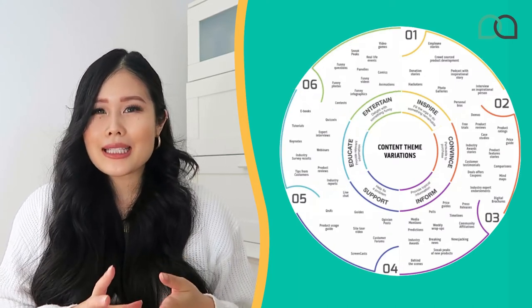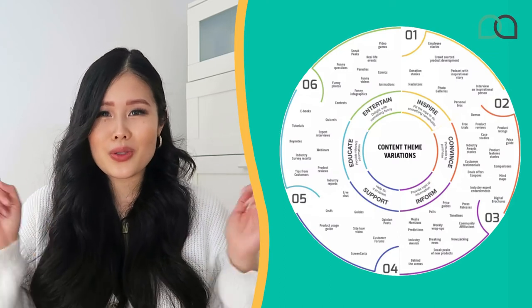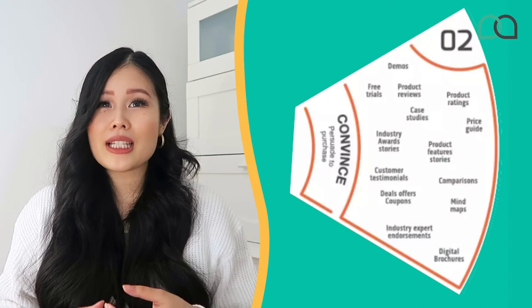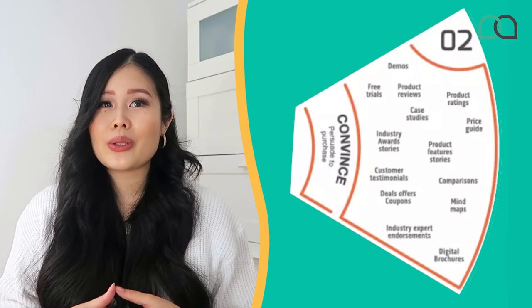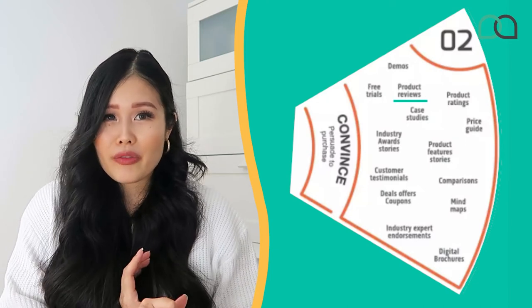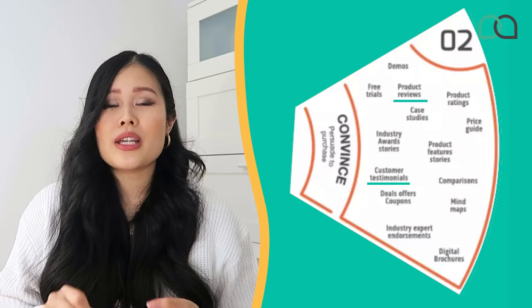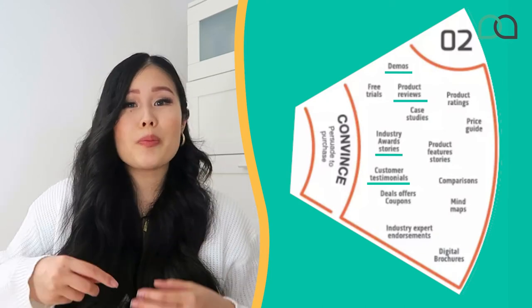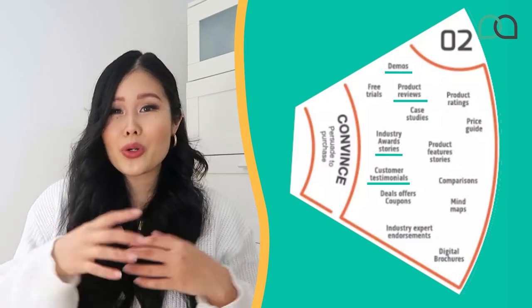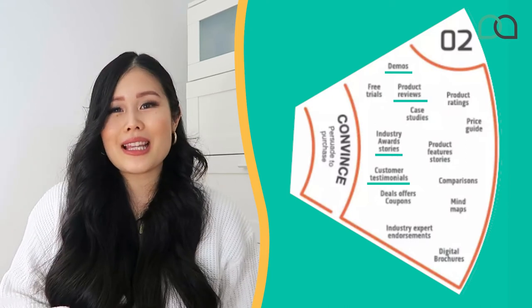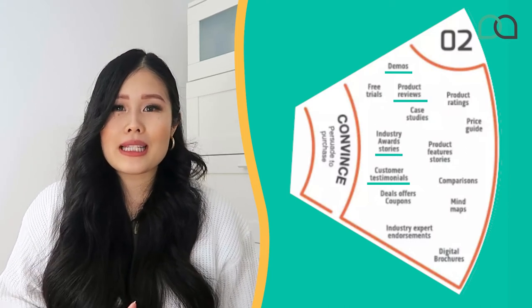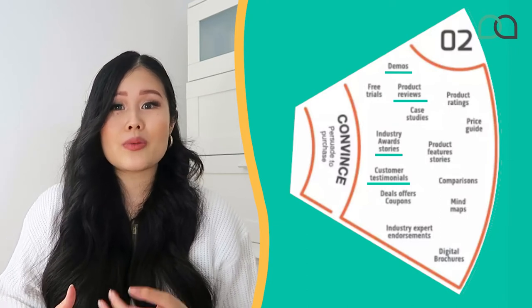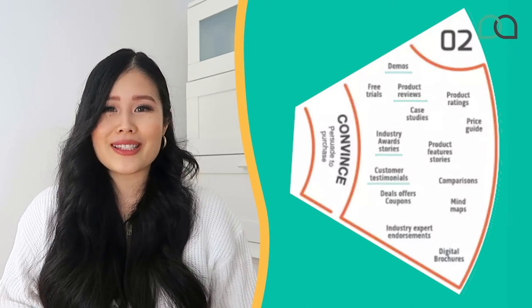So now we're looking at the convinced section, and your content ideas here include things like sharing your product reviews, customer testimonials, demonstrations, and story of winning awards. Essentially you won't be using all the ideas in the wheel — it's just there to help you come up with some ideas. And as you work with your social media VA, they're going to keep building on this list as well, so you've always got a point of reference.